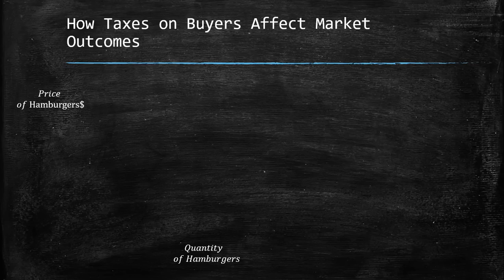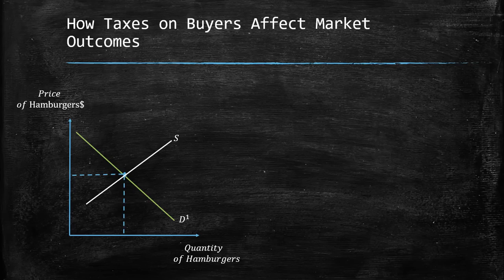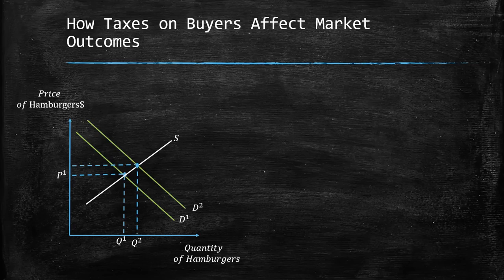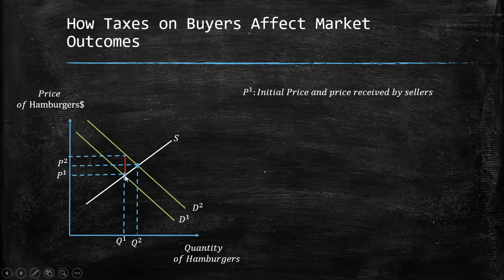Now, how do taxes on buyers affect market outcomes? Imagine the same hamburger market with a supply curve and a demand curve. Because buyers have to pay a higher price, this initially affects the demand side. P1 is the initial equilibrium price that buyers pay first, but because of the tax they now have to pay P3.